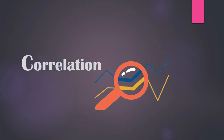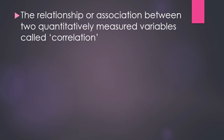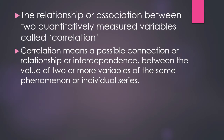Welcome to Nursing Diaries. In this video we will be discussing correlation. Correlation is a mutual relationship between two variables — the relationship or association between two quantitatively measured variables. Correlation design allows the researcher to determine relationships between variables rather than drawing cause-and-effect conclusions, which can lead to incorrect conclusions. Correlation means a possible connection, relationship, or interdependence between the values of two or more variables of the same phenomena.